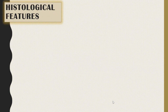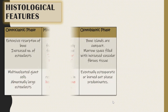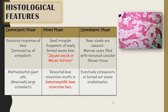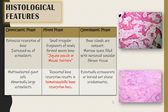On the histological slide, during the osteoclastic phase there is extensive resorption of bone, with an increased number of osteoclasts and multinucleated giant cells. During the mixed phase, small irregular fragments of newly formed woven bone are seen with a jigsaw puzzle or mosaic pattern. Repeated bone resorption results in hematoxyphilic bone resorption lines.